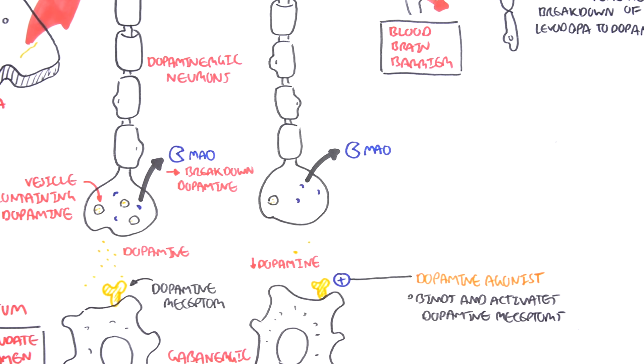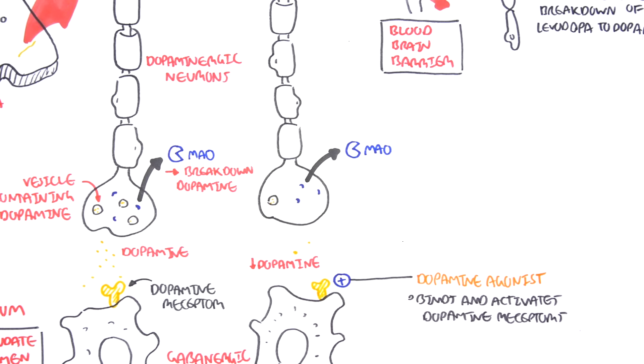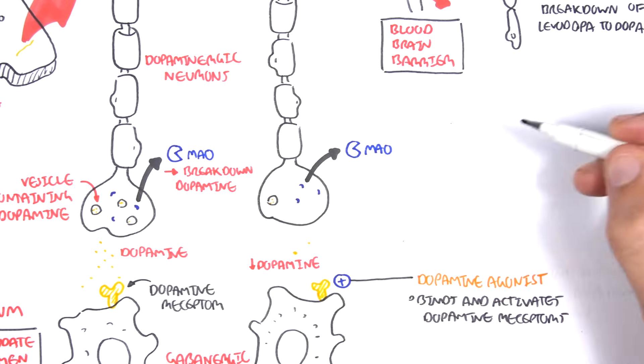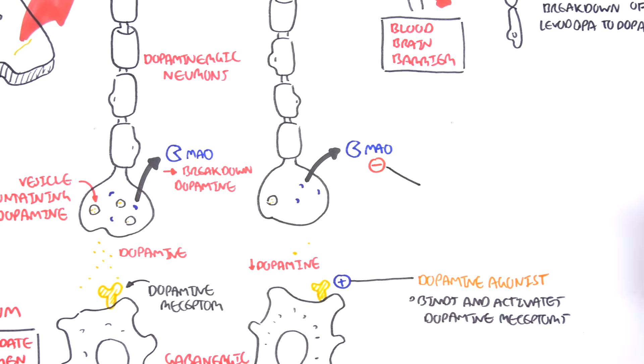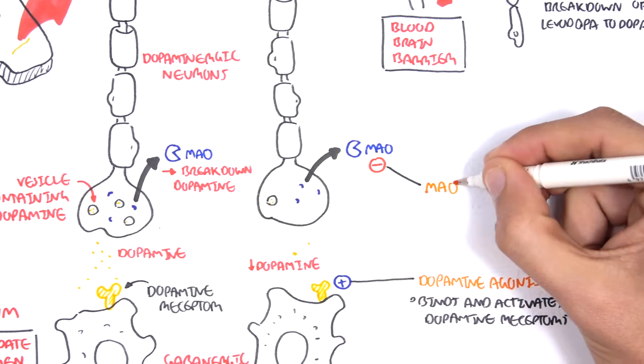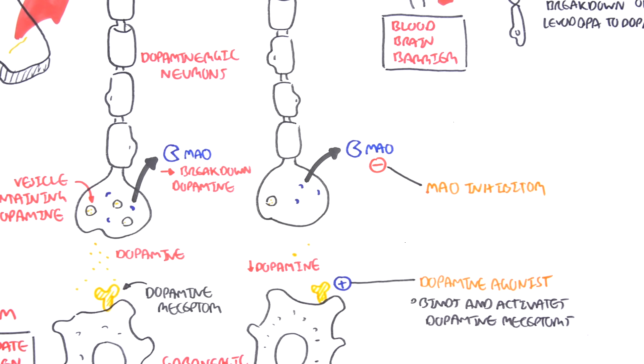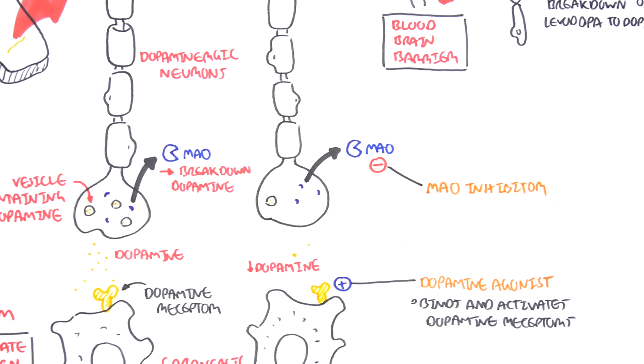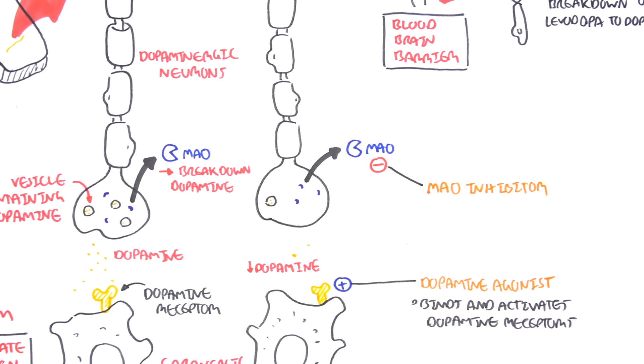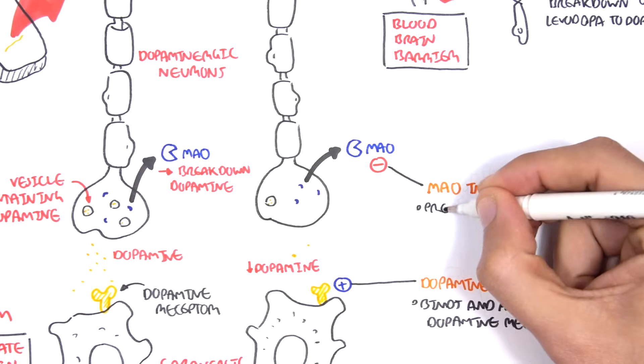You can also administer monoamine oxidase inhibitors. These inhibit the enzyme within the neuron that would otherwise break down dopamine. They prevent the breakdown of dopamine, allowing more dopamine to be used for longer periods of time.